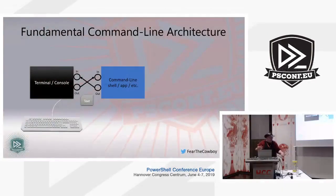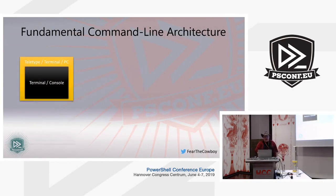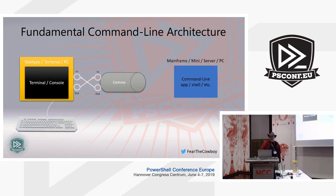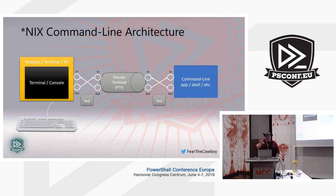A fundamental command line architecture in other operating systems looks like this: you have a terminal, you have a command line app, and you've got a couple of pipes that connect them. You can stick something in the middle of those pipes and say, 'Can you put this over there?' — allowing remote connections. This worked from the beginning of time on Unix and other operating systems; it's just not something they did on Windows. That little piece in the middle — just a couple of pipes and some know-how — is the pseudo-terminal. It abstracts the details.